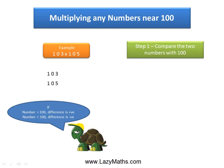While comparing, if the number is more than 100, we write the difference as positive. If the number is less than 100, we write the difference with a negative sign. In this case, both numbers are more than 100. We know that 103 is 3 more than 100, so we write the difference as +3. And 105 is 5 more than 100, so we write the difference as +5.